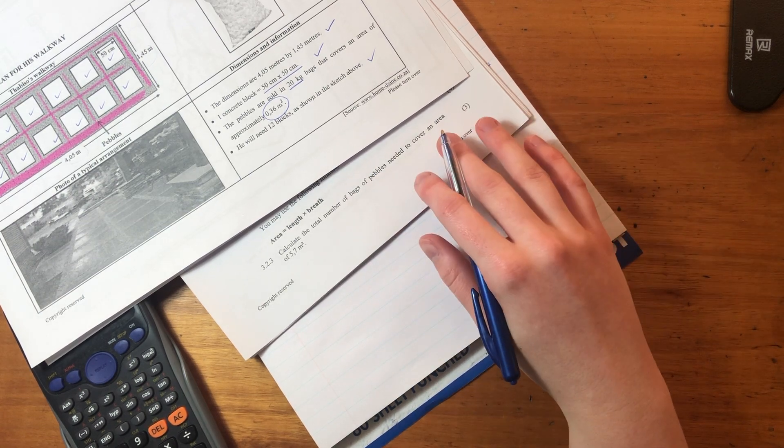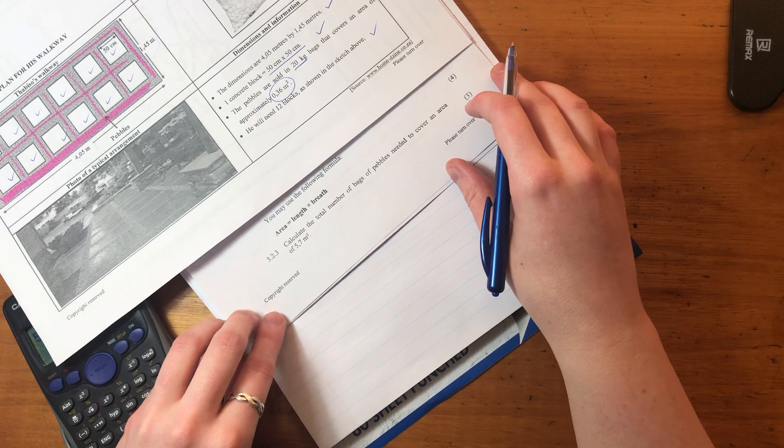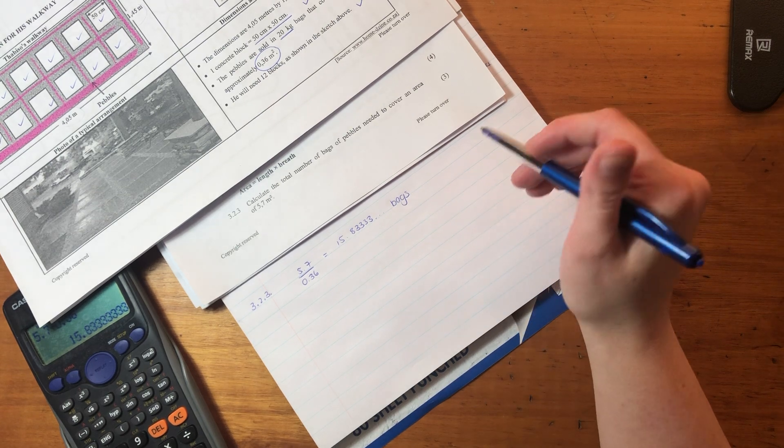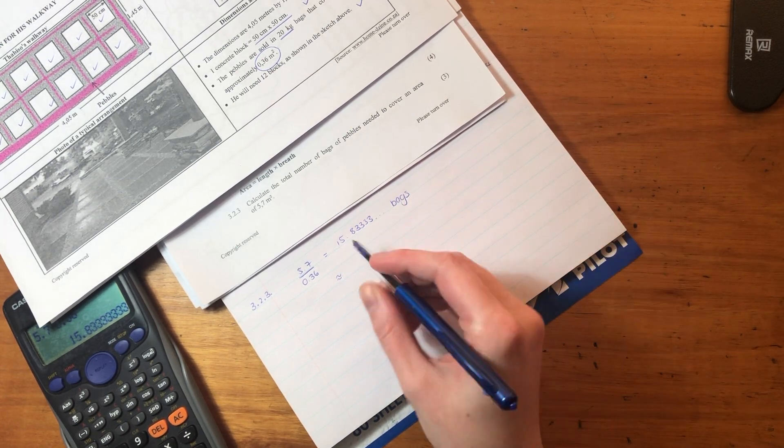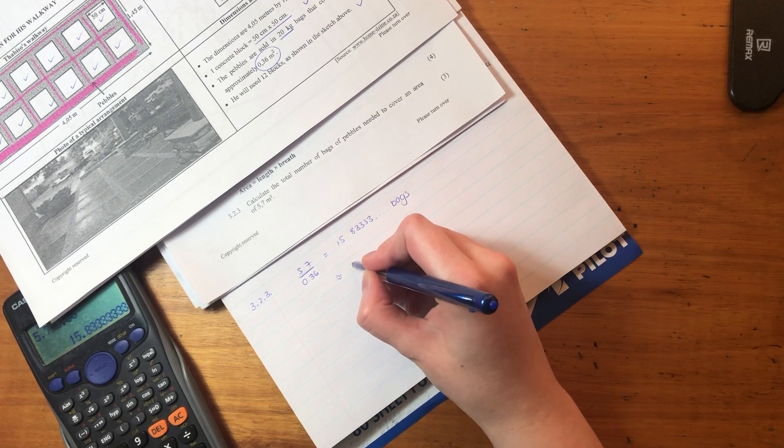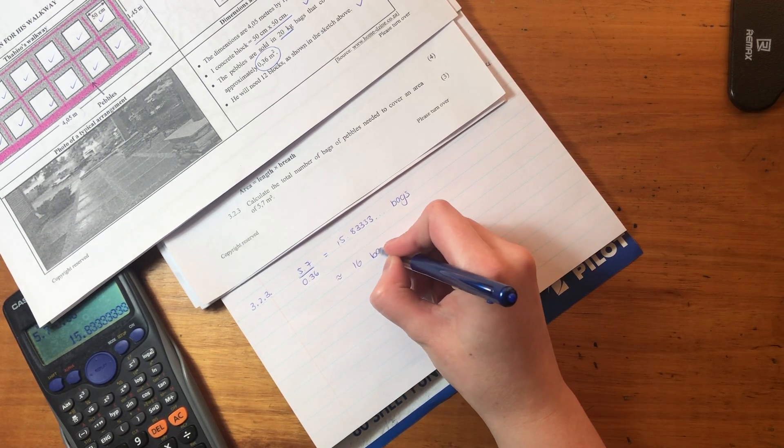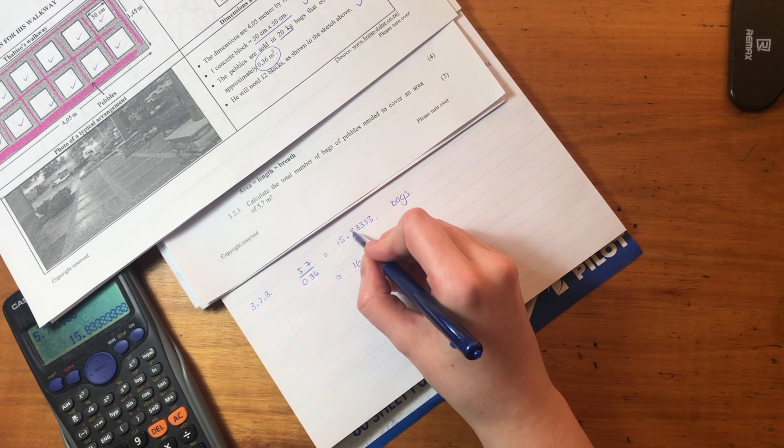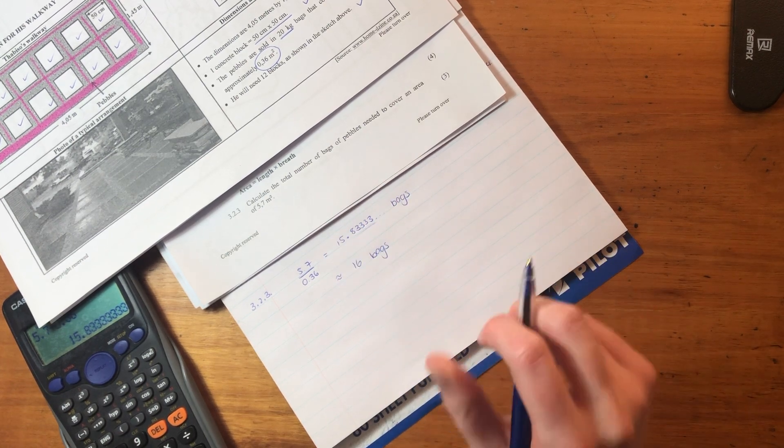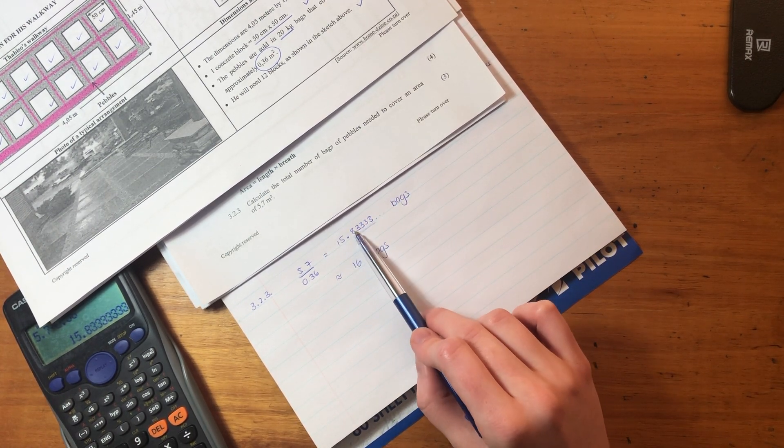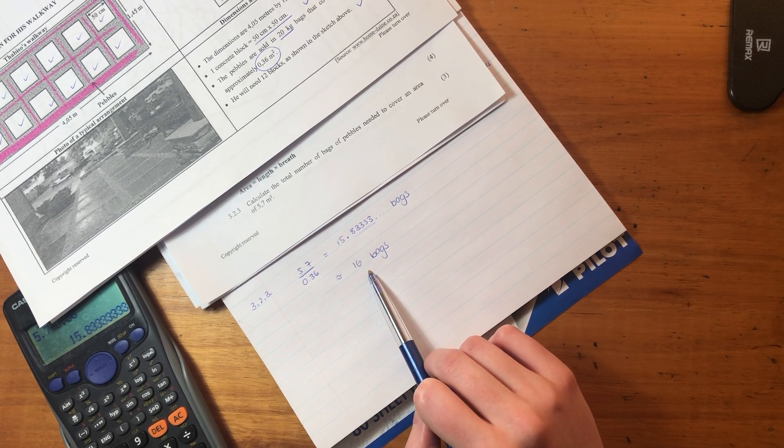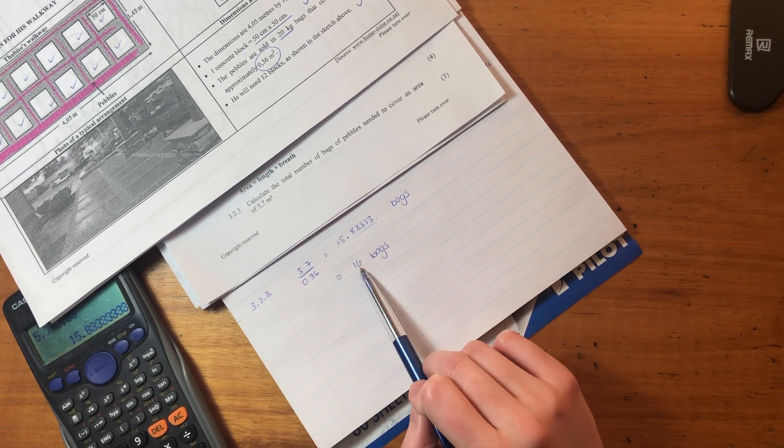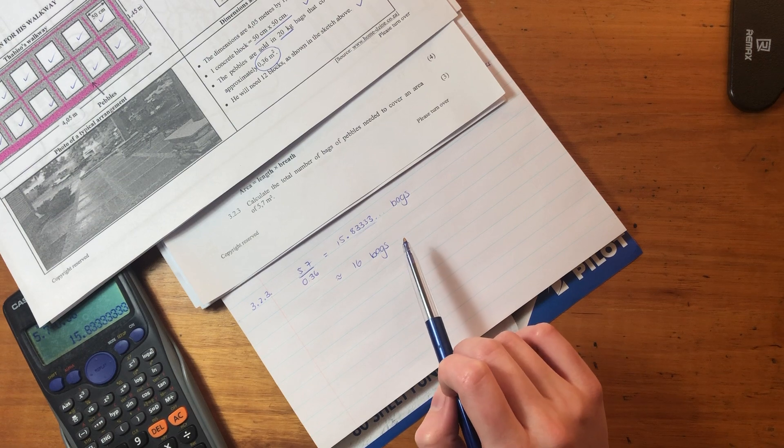But what's important about this - it says calculate the total number of bags of pebbles needed to cover an area. When you go buy pebbles at a DIY shop or a nursery that sells pebbles, you can't go in and say to them, I want 15.833333 bags of pebbles. So you actually need to say, he's actually going to buy 16 bags. And the reason he's going to buy 16 bags is because he can't buy a bag that is this weighting of pebbles or contains this many pebbles. He can either buy 15 bags or he buys 16 bags. He can't buy 15 because 15 is going to be too few to cover the whole area. So you buy 16 and he's going to have some extra pebbles left over.